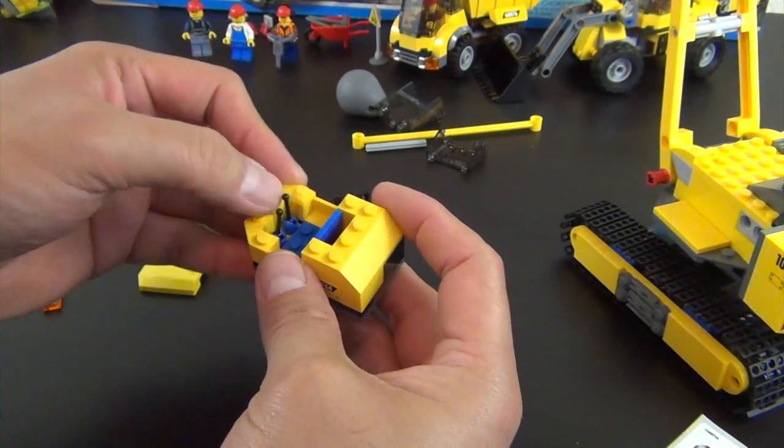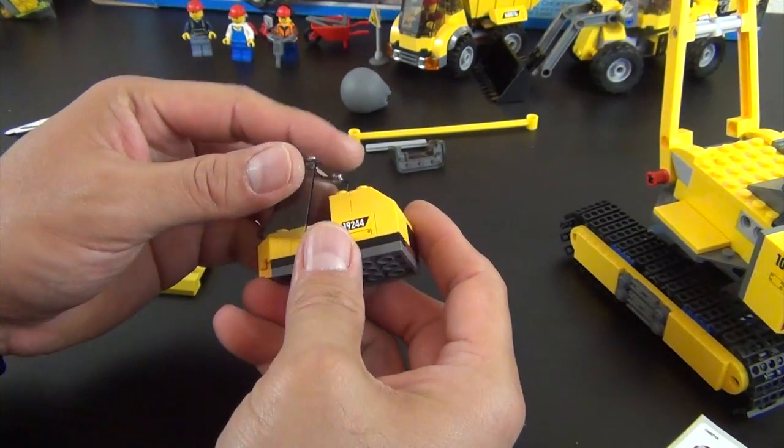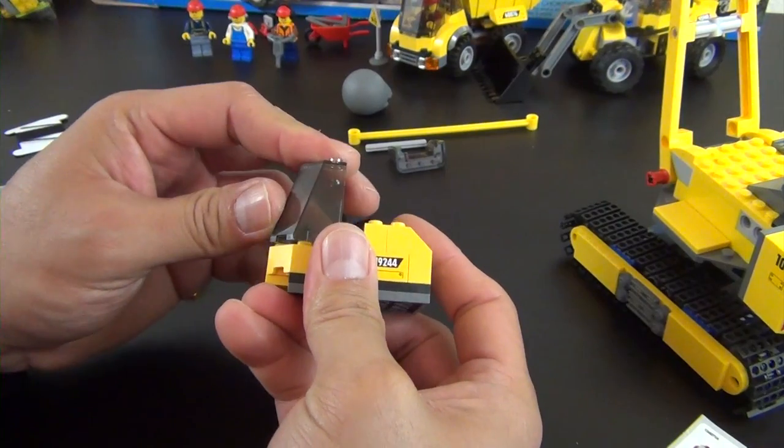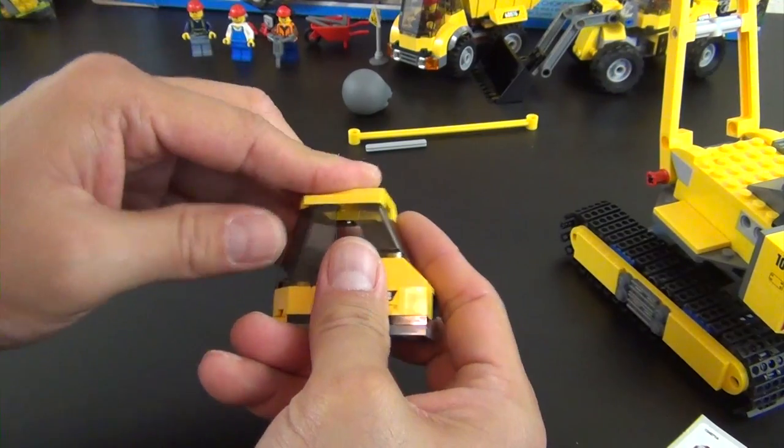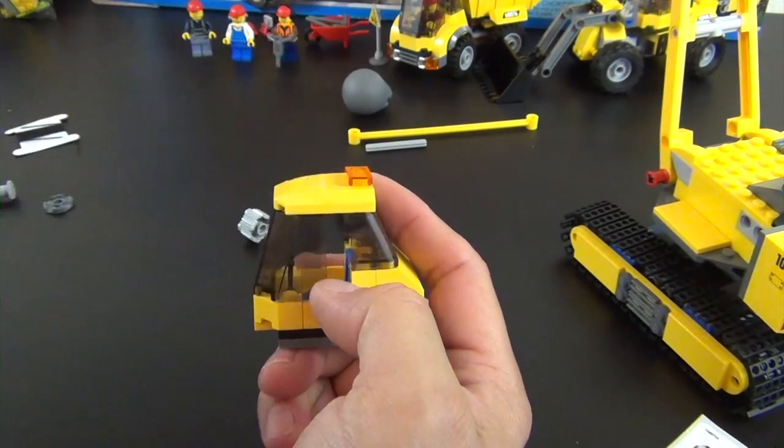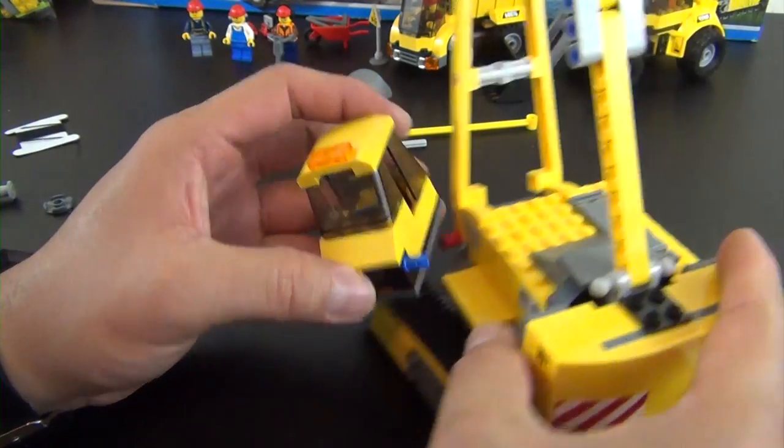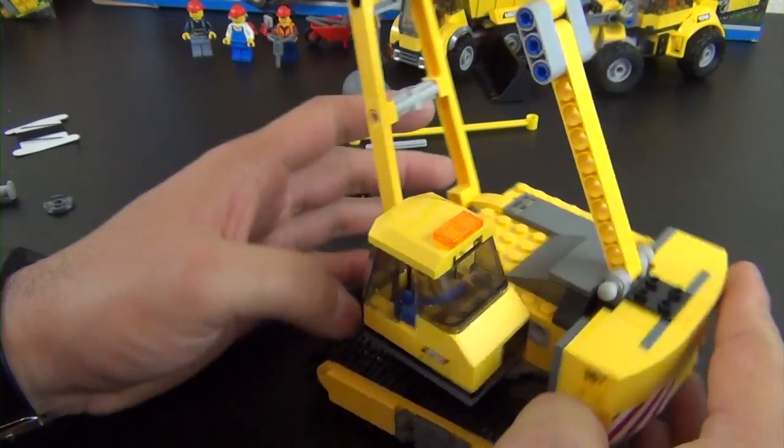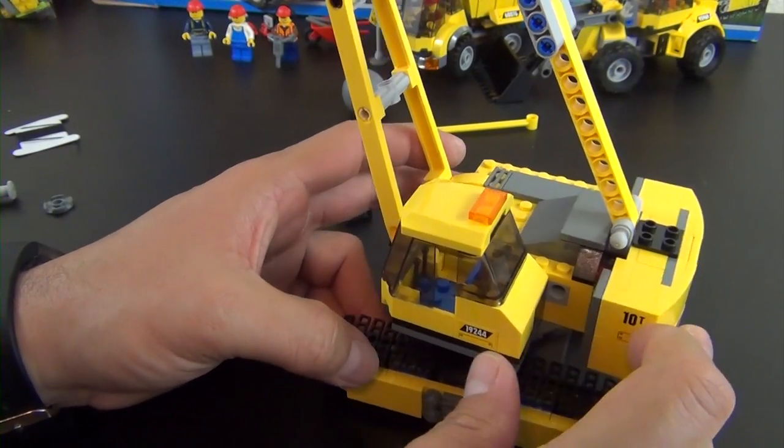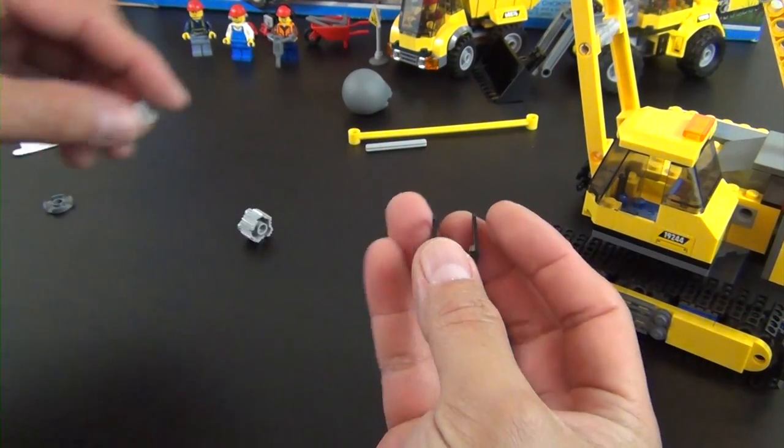So we have a big windscreen and the shorter windscreen, at the roof and the trans orange tile. This will attach to that Technic brick that's right there.